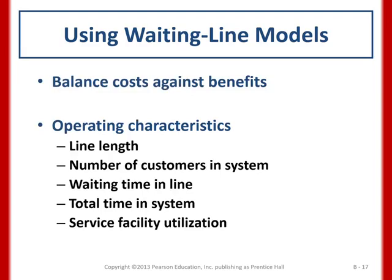To use waiting line models, we must balance cost against benefit by examining: line length, number of customers in the system, waiting time in line, total time in the system, and service facility utilization. Ideally, lines should be short, waiting times minimal, and utilization high — meaning the server is performing efficiently relative to the customer arrival rate.